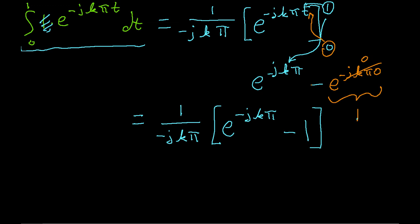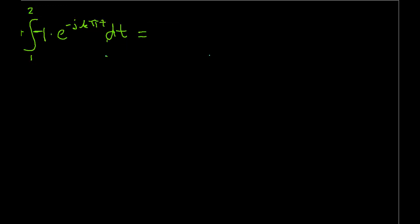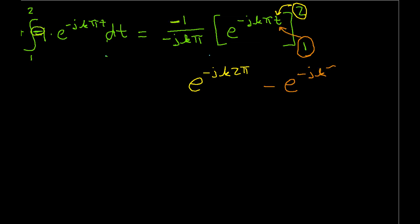This is the second integral. Again, we have the constant minus j k pi, so we put 1 over minus j k pi times minus e to the minus j k pi t evaluated from 1 to 2. So, if we evaluate, or if we plug in 2 for t, we get e to the minus j k 2 pi. If we plug in 1 for t, we get e to the minus j k pi. And then taking into account the fact that the negative 1 and the negative j k pi, those negative signs cancel, we end up with 1 over j k pi times e to the minus j k 2 pi minus e to the minus j k pi.